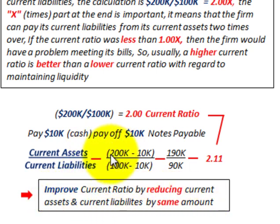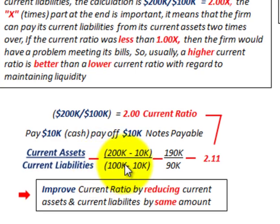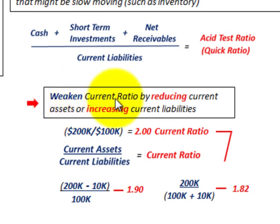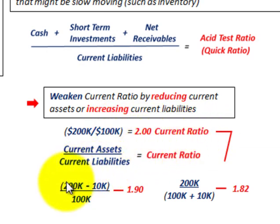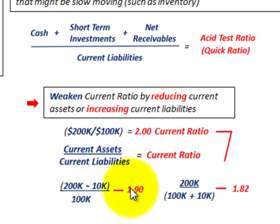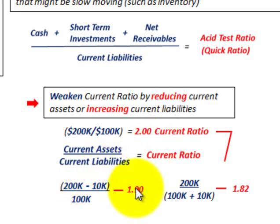Now let's look at the case where we weaken our current ratio by reducing current assets or increasing current liabilities. With $200,000 in current assets and $100,000 in current liabilities — a 2.00 ratio — if we reduce current assets by $10,000 but current liabilities remain the same, simple division gives us a new current ratio of 1.90. We've reduced and weakened our current ratio.